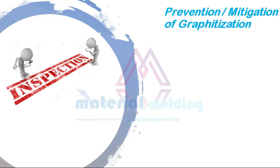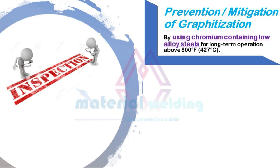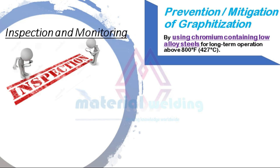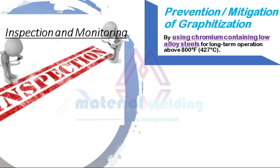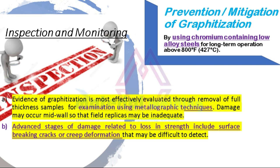How can we prevent or mitigate this damage? Graphitization can be prevented by using chromium-containing low-alloy steels for long-term operation above 800 degrees Fahrenheit. For inspection and monitoring, evidence of graphitization is most effectively evaluated through removal of full-thickness samples for examination using metallographic techniques. Damage may occur mid-wall, so field replicas may be inadequate. Advanced stages of damage related to loss in strength may include surface-breaking cracks or creep deformation that can be difficult to detect.